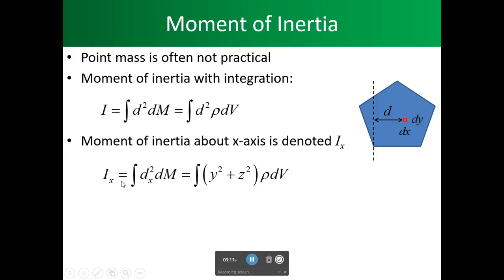Notice, what we have here is I of x is equal to the integral, or we said the triple integral of dx, the distance of, in reference to x, squared, dm, which is equal to the integral of not x, but just y squared plus z squared, that quantity times rho times dv. Now, note that the moment of inertia of x is not equal to the x squared dm, but it is equal to everything but the x squared, which would be y squared plus z squared.